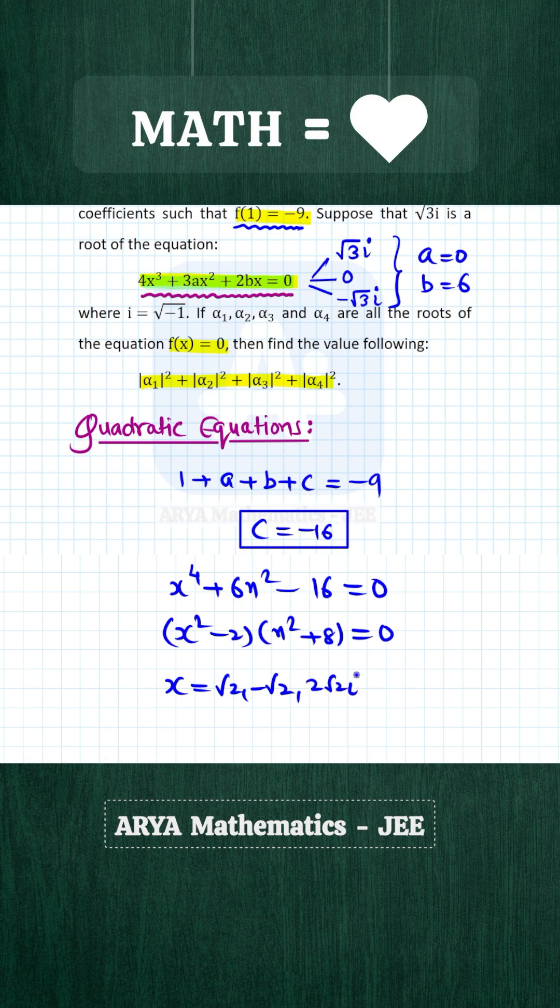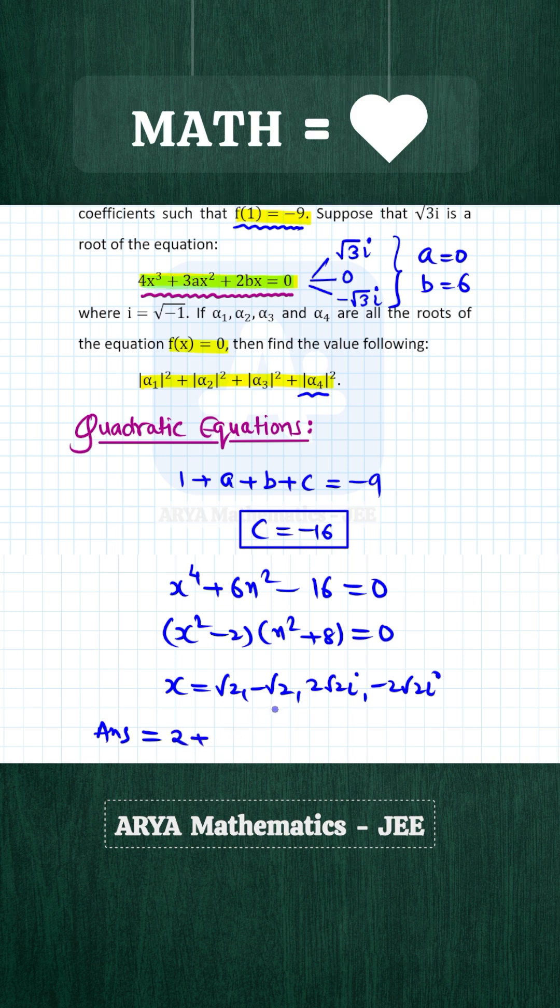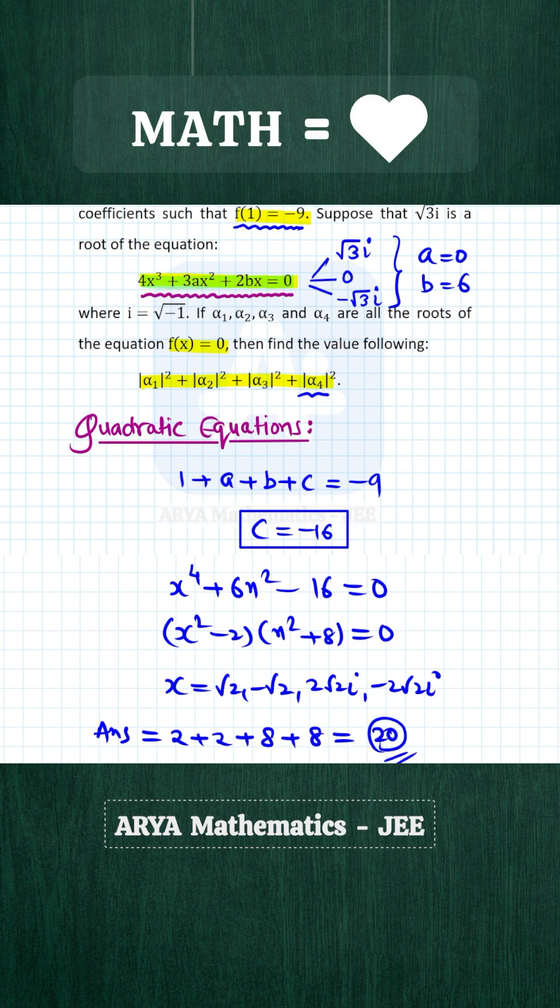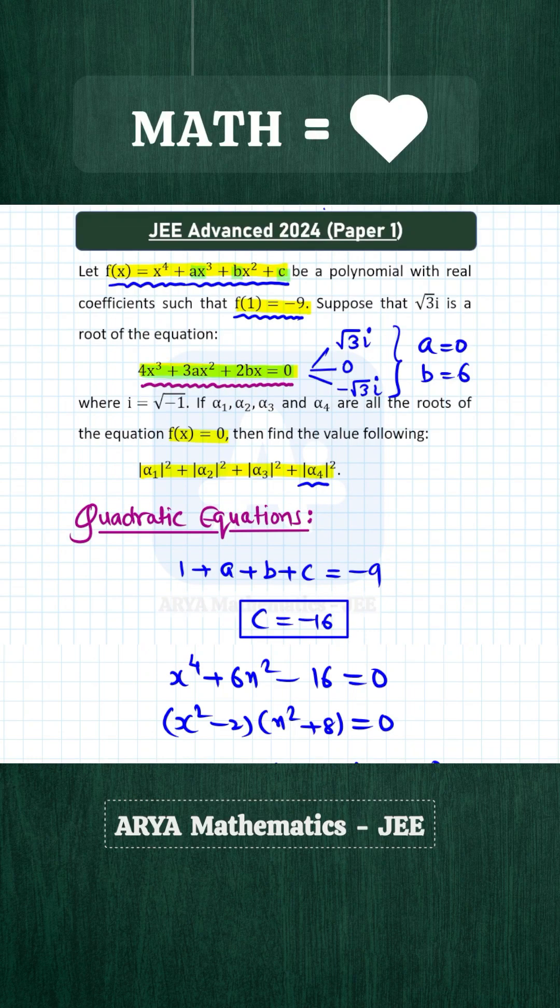So x will be 2√2i and -2√2i. We need the sum of squares of modulus of these roots. So |√2|² will be 2, |√2|² again will be 2, |2√2i| will be 2√2, squared will be 8, and similarly another 8. So sum of all these numbers will be 20, therefore the correct answer for this problem is 20.